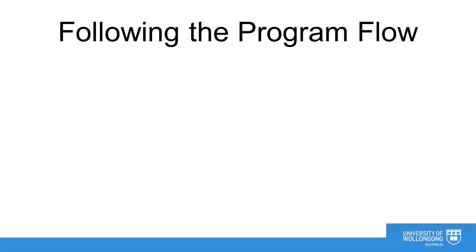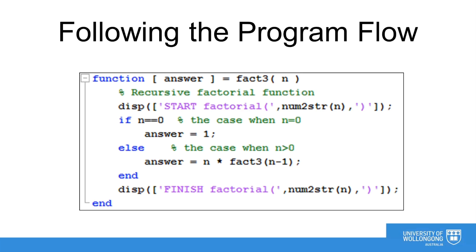Following the program flow in a recursive environment is not straightforward. So here is the function reproduced for our benefit and we will track the flow through the function for each call. Let's assume the function is initially called from the command window with input n equals 4. The function will start executing from the beginning, print out the starting line, and then check the value of n. As n equals 4 it will skip over the if statement and execute the else part.